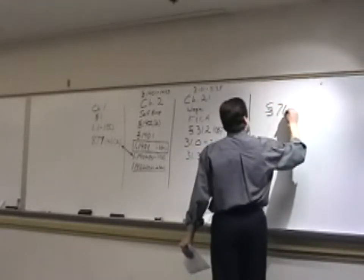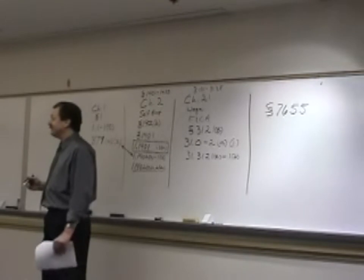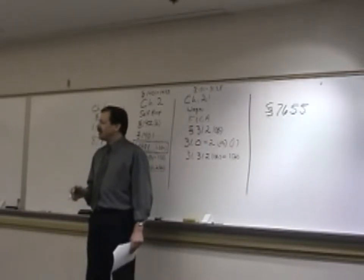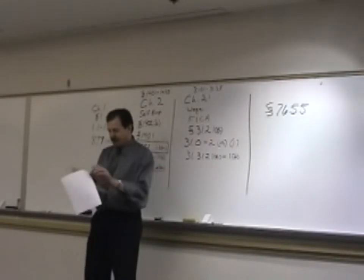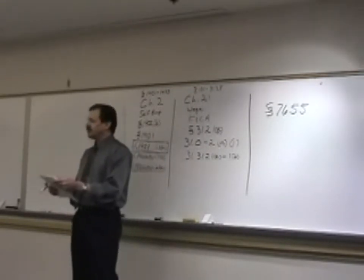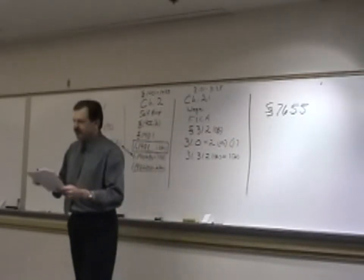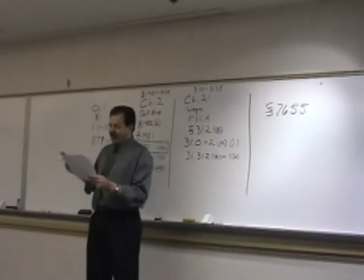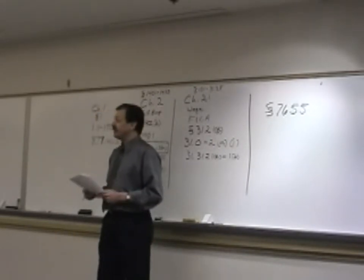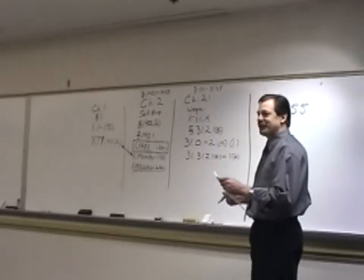Section 7655 — in a part of the code called Possessions — says for taxes imposed on possessions, see Chapters 2 and 21. Provision number 22: 'Imposition of tax in possessions. For provisions imposing tax on the possessions, see: (1) Chapter 2 relating to the tax on self-employment income, and (2) Chapter 21 relating to the tax under the Federal Insurance Contributions Act.' That's a nice gift — a statute that confirms Chapters 2 and 21 are for the possessions.